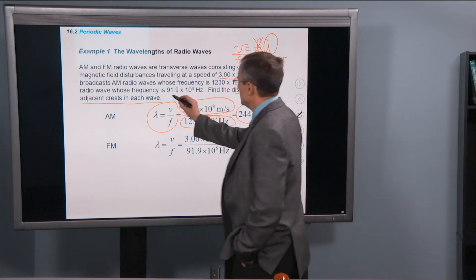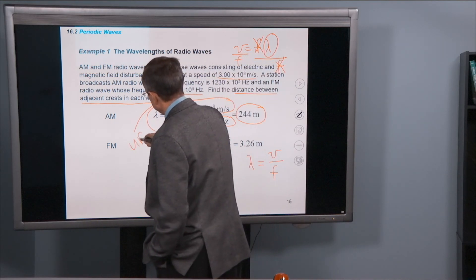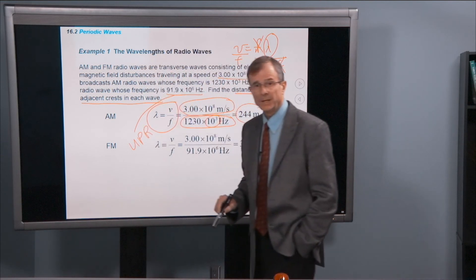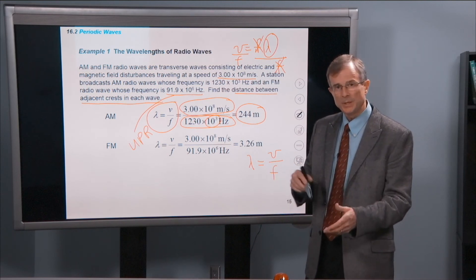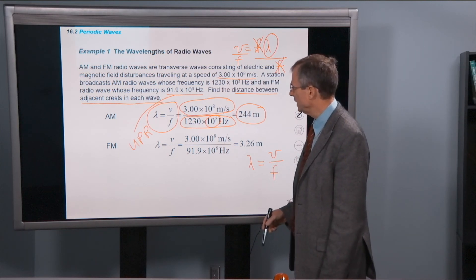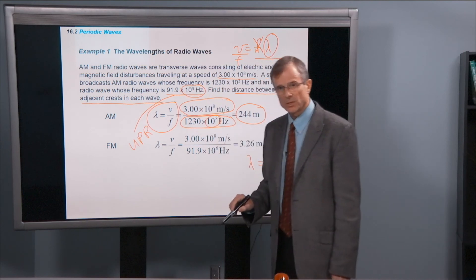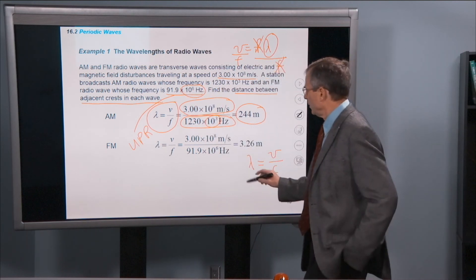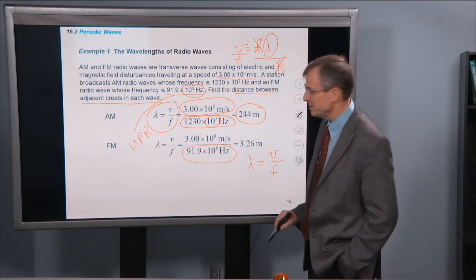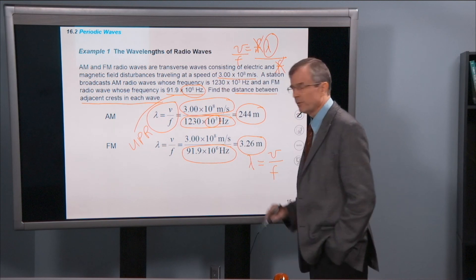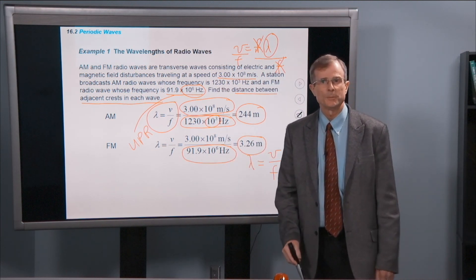FM stations, 91.9. This is Utah Public Radio's frequency sponsored by here at USU. There's a relationship between UPR and Utah State University. It's in the megahertz range. So times 10 to the 6 hertz, much higher frequency. Well, if you put that higher frequency in the denominator, then what you end up with is a smaller wavelength. So about three meters. Just three, about three yards, about the width of this room or so.